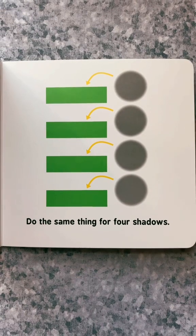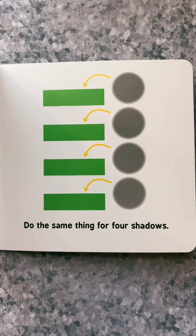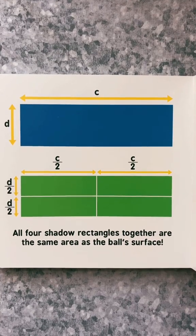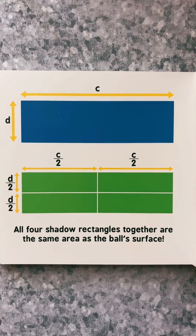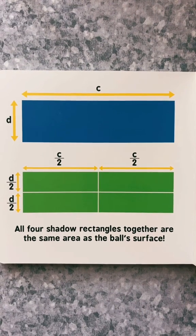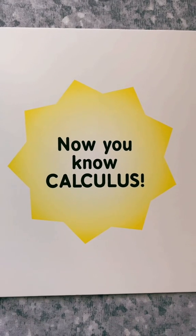Do the same thing for four shadows. All four shadow rectangles together are the same area as the ball's surface. Now, you know calculus.